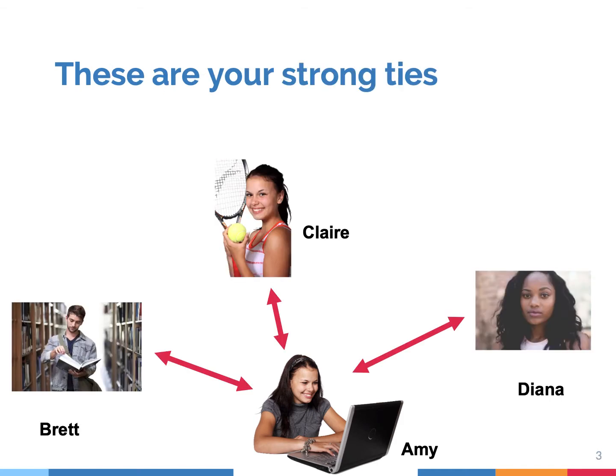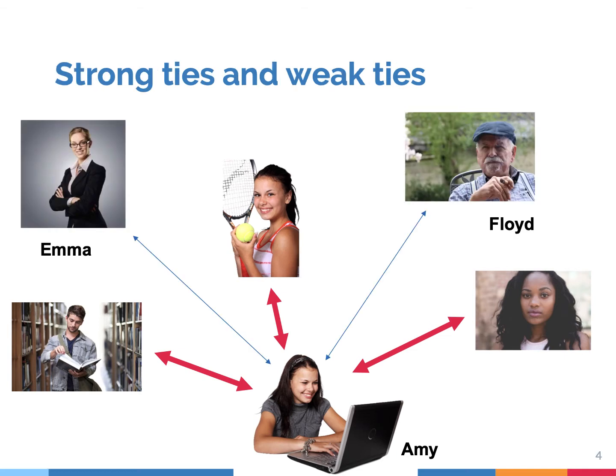Suppose we look at a sample of your social connections. Three of them are your friends, your strong ties. And imagine we look at these two other people who also belong to your network. But they are weak ties, such as a neighbor or a teacher. You know them, but not very well.